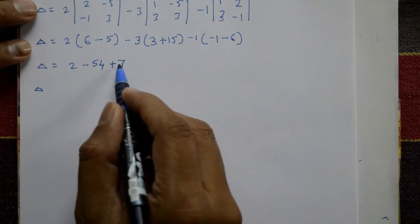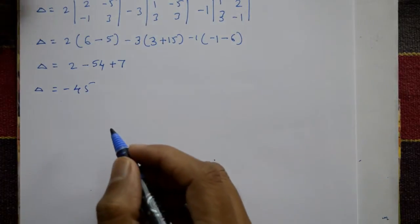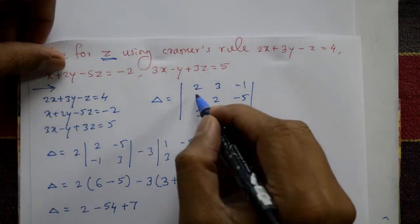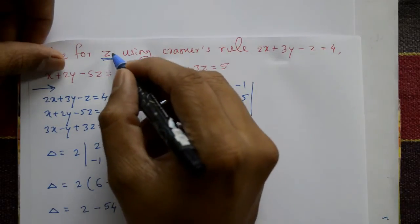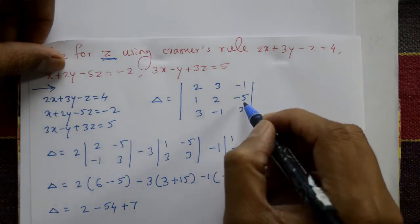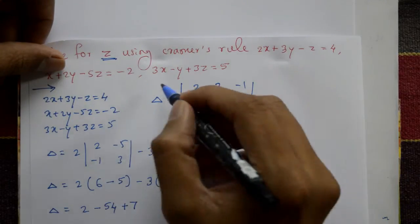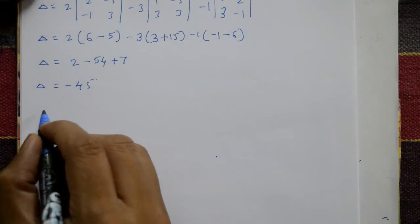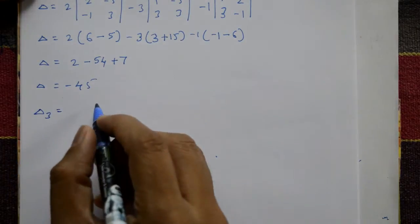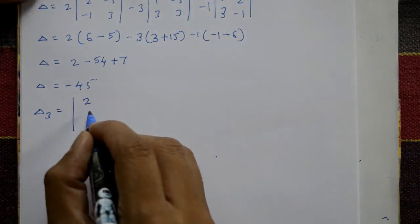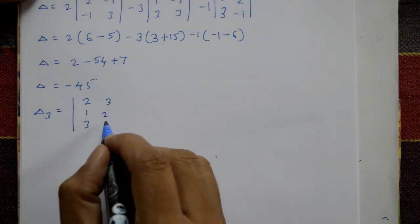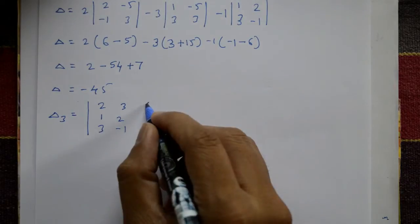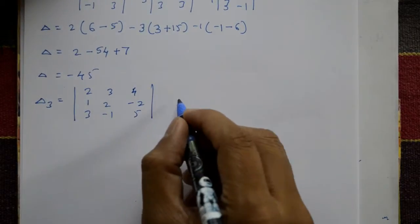Now we require the value of z. For z, keep the first and second columns as they are. Replace the third column with the constants: 4, minus 2, and 5. So Delta 3 equals the determinant with first two columns same — 2, 1, 3 in column one and 3, 2, minus 1 in column two — and the third column changed to 4, minus 2, 5.